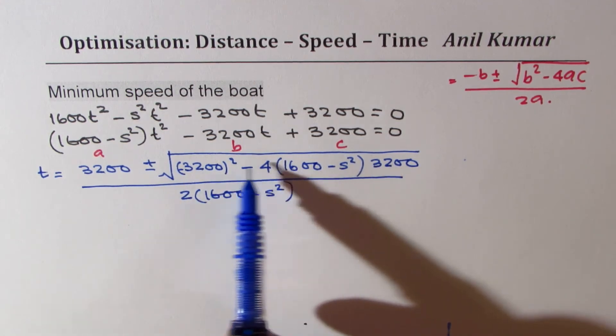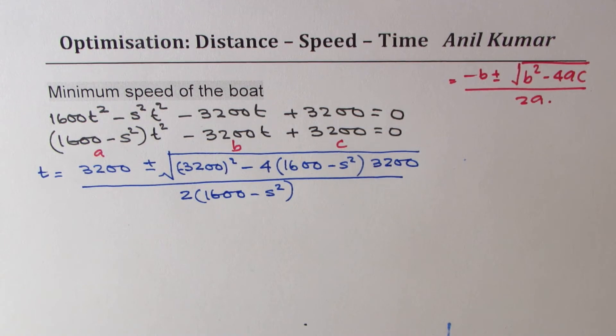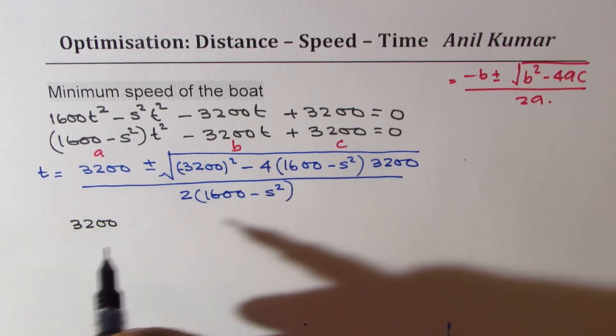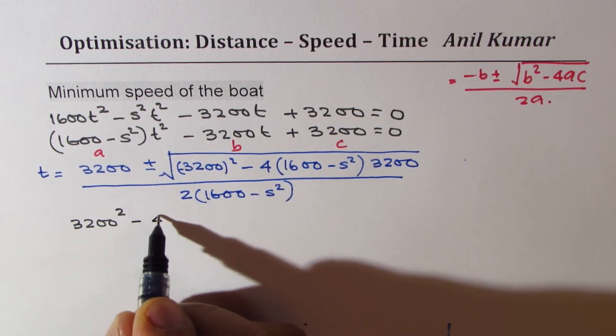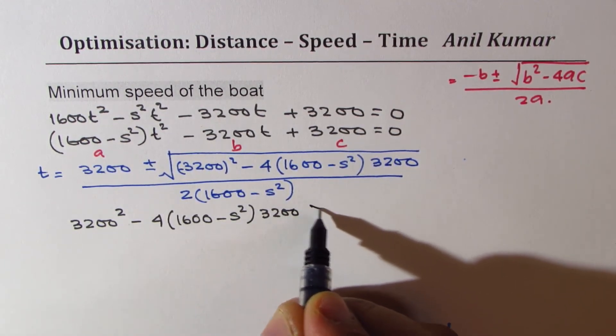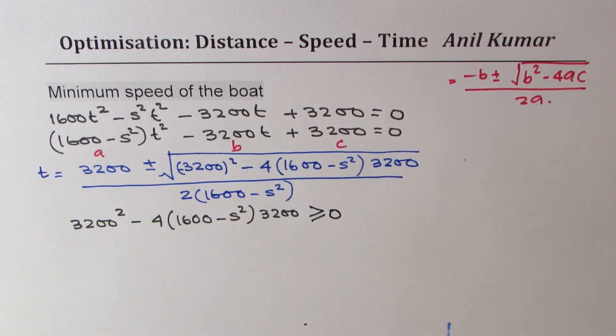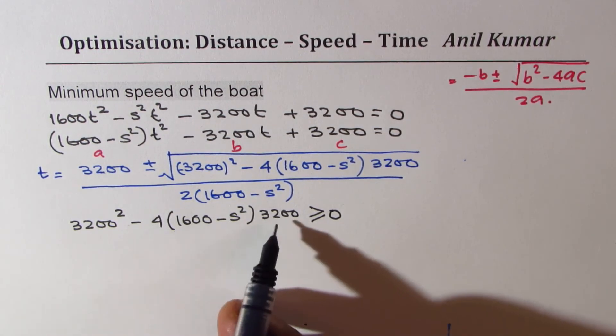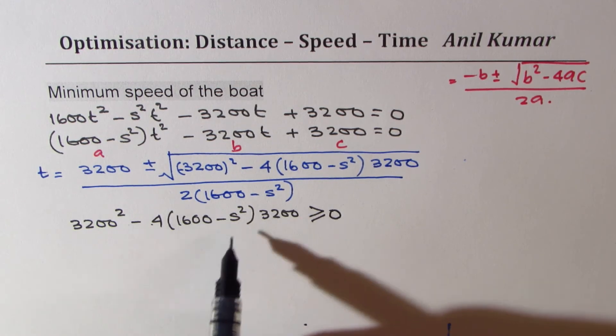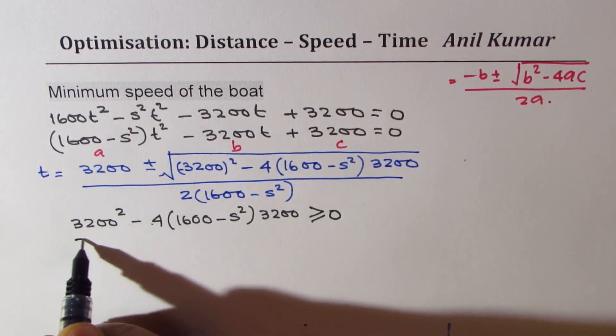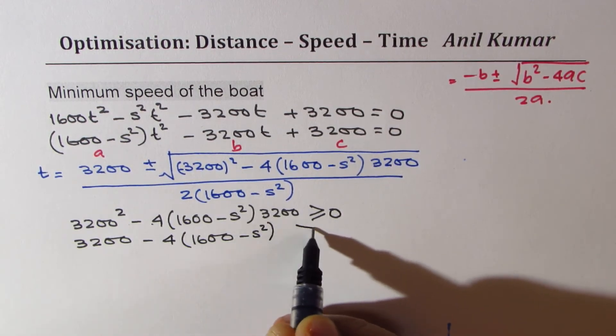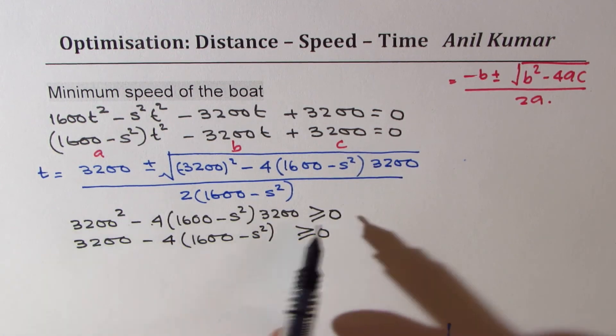Now for a realistic time, the number within the square root should be greater than 0. From here we can say that (3200)² minus 4(1600-s²)(3200) should be greater than or equal to 0 for a real solution. Dividing by 3200, we get 3200 minus 4(1600-s²) is greater than or equal to 0. We cancel one of these 3200s from all three terms.